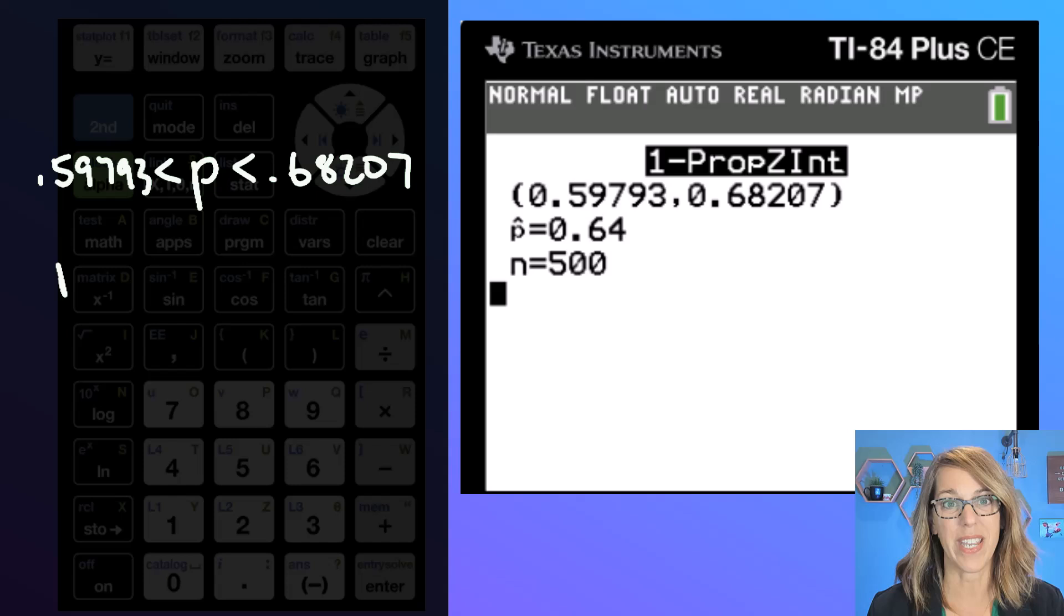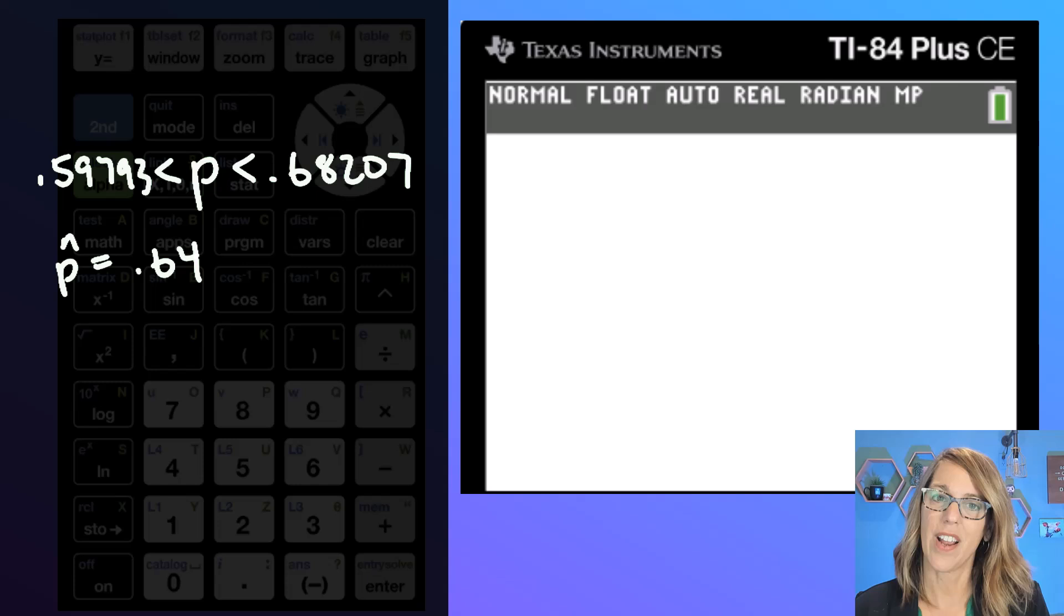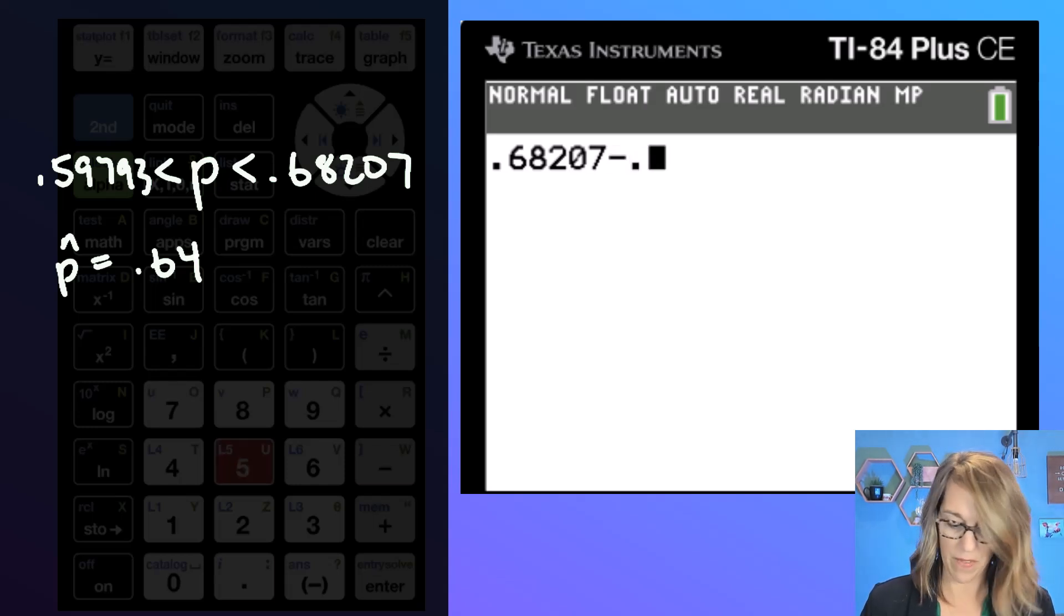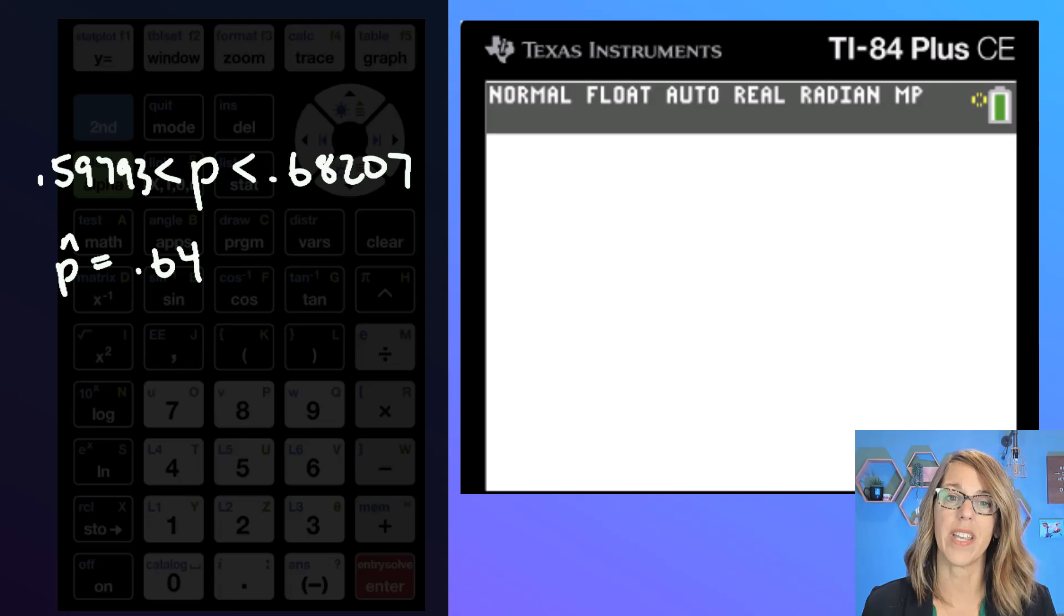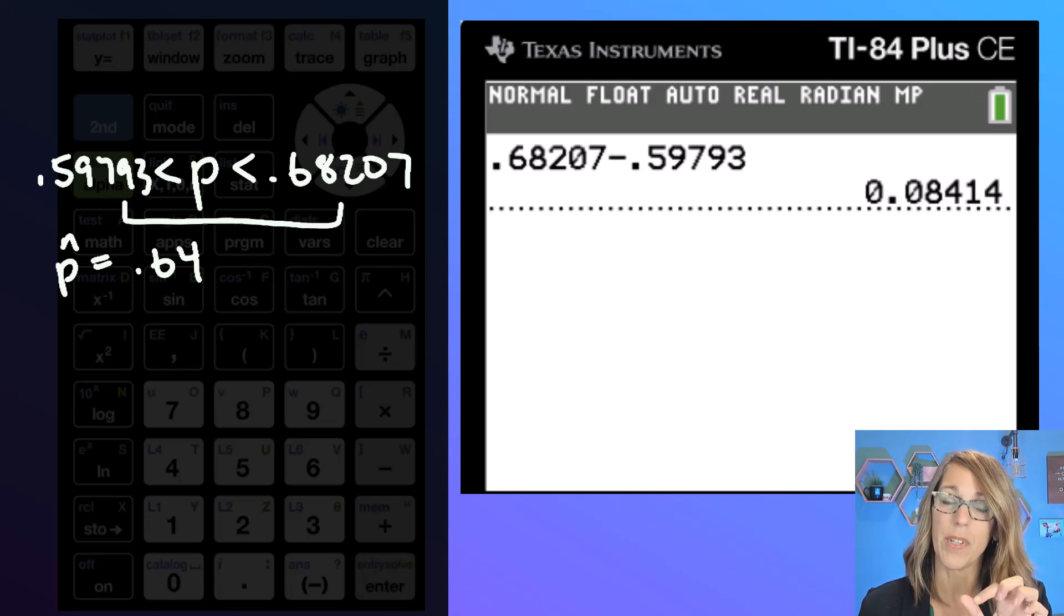It also gives me that p hat which is x divided by n. To find that margin of error I want to take the upper number in my interval which was 0.68207 and subtract the lower number 0.59793. This gives me the entire length of the interval but the margin of error is half of that length.